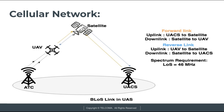To summarize BLOS: in the forward link uplink, UACs send information to the satellite; in the forward link downlink, the satellite sends information to the UAV. In the reverse link uplink, the UAV sends information to the satellite; in the reverse link downlink, the satellite sends information to the UACs. The spectrum requirement for BLOS is 46 MHz. These are the two link types — visual line of sight (VLOS) and beyond line of sight (BLOS) — in UAV systems.